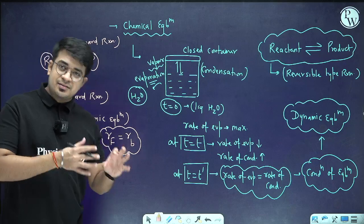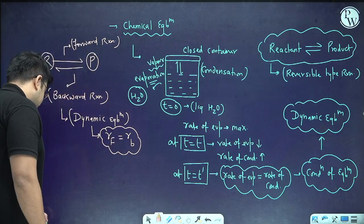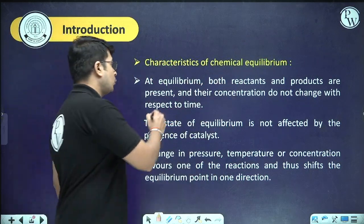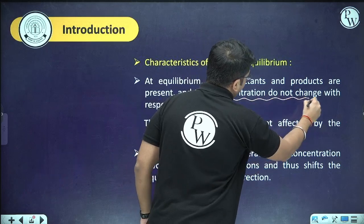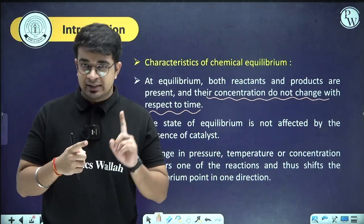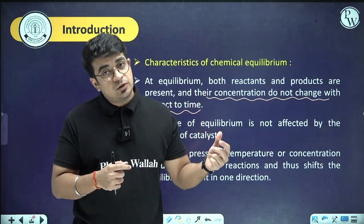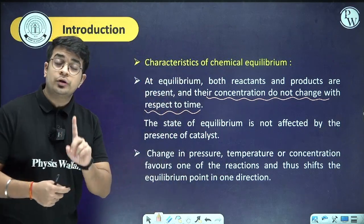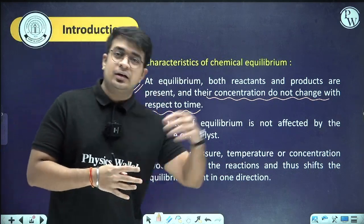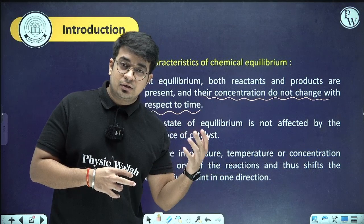Let us understand the basic characteristics of equilibrium. First: at equilibrium, both reactant and product are present and their concentrations do not change with respect to time. I'm not saying both concentrations are the same — they will become constant because every time rate of forward reaction equals rate of backward reaction, their concentrations don't change, but both are present.